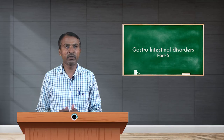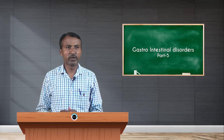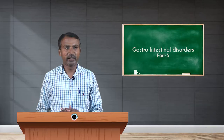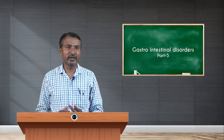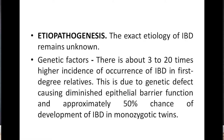Ulcerative colitis affects the rectum and descending colon and may involve the entire length of the large bowel. Both diseases have systemic involvement in the form of polyarthritis, ankylosing spondylitis, skin lesions, and hepatic involvement. Both diseases can occur at any age but are more frequent in the second and third decades of life, with females affected slightly more often.